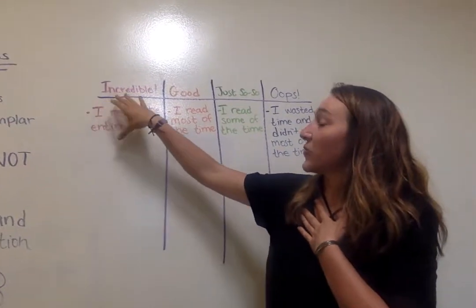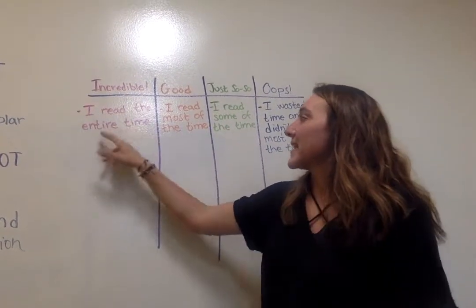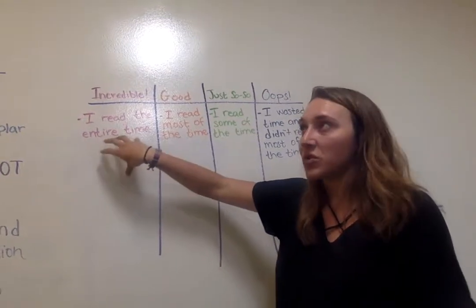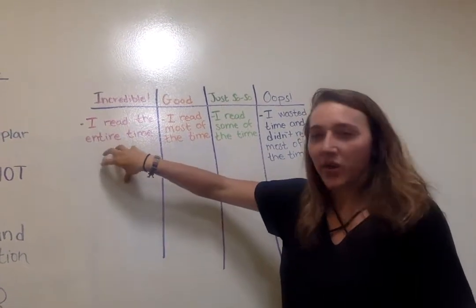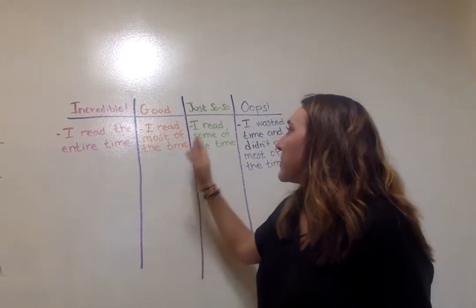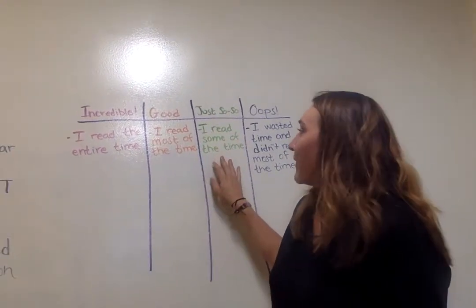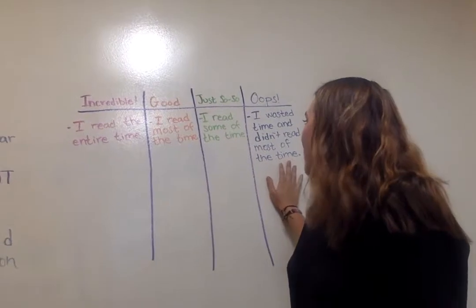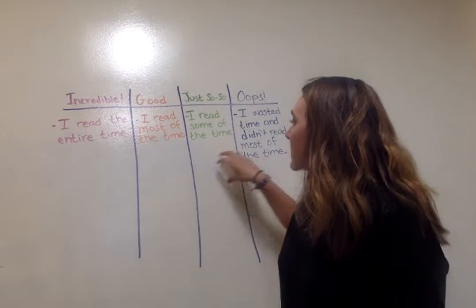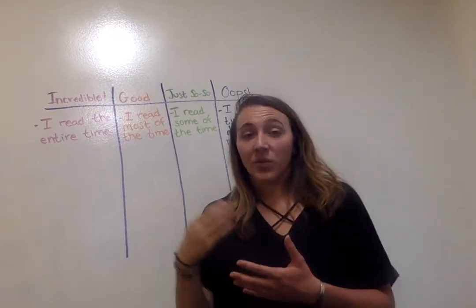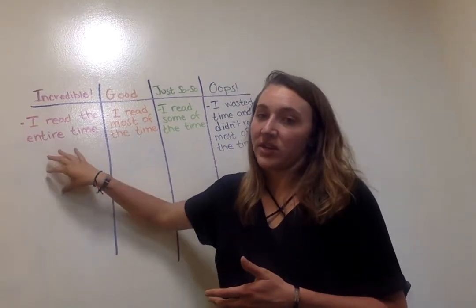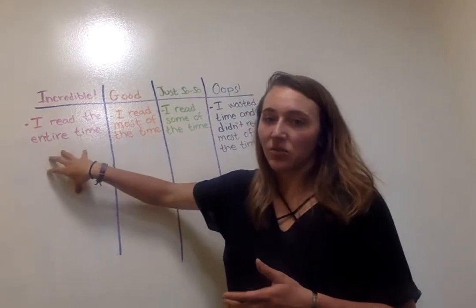In order for students to give themselves an 'incredible,' that would mean 'I read the entire time.' We talk about what it looks like to read the entire time — what does your body look like, what do you sound like, and what are the criteria for putting yourself in that category? A 'good' would be 'I read most of the time.' A 'just so-so' would be 'I read some of the time.' And an 'oops' is 'I wasted time and didn't read most of the time.' We discuss what each of these looks like, so as students went into their silent reading time, they knew what their goal was and could self-assess how effectively they met it.